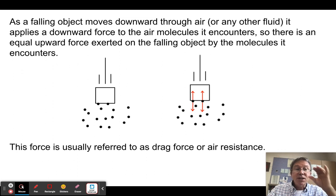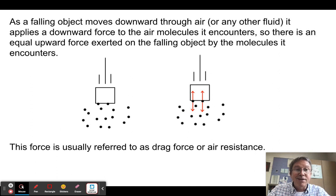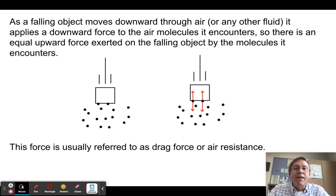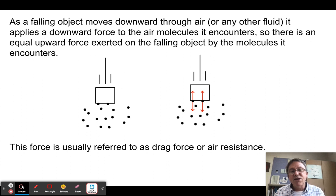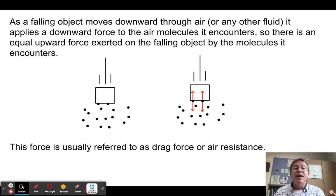Now let's change this slightly and have the object—instead of sliding across a horizontal frictionless surface—falling downward through the air or some other fluid. On the AP test they will usually say you may consider air resistance to be negligible. Sometimes they call it air resistance, sometimes drag force, sometimes air friction. But every once in a while they'll say air resistance is non-negligible, meaning you do need to think about how it's going to affect the motion of the object.